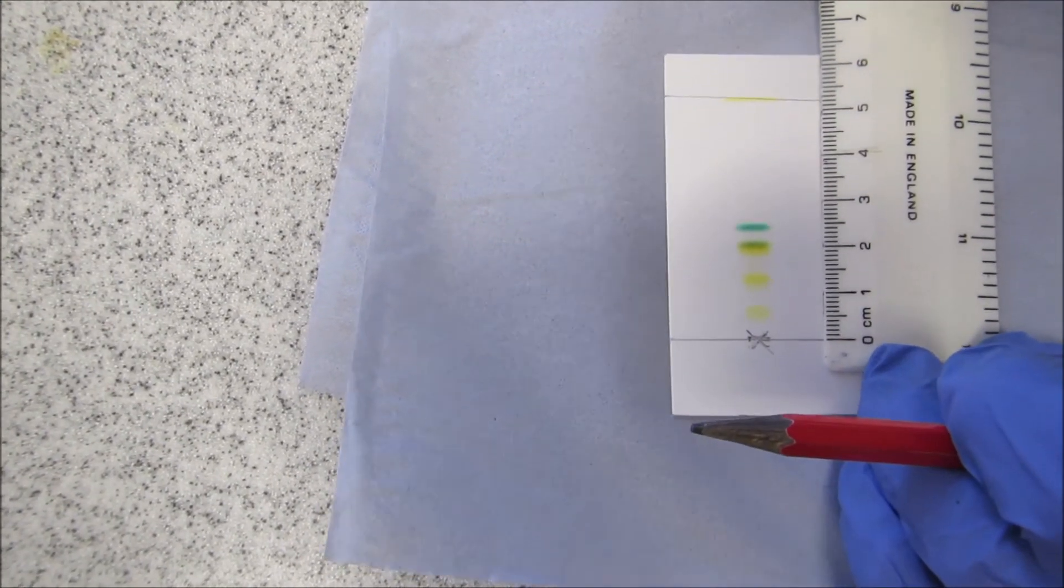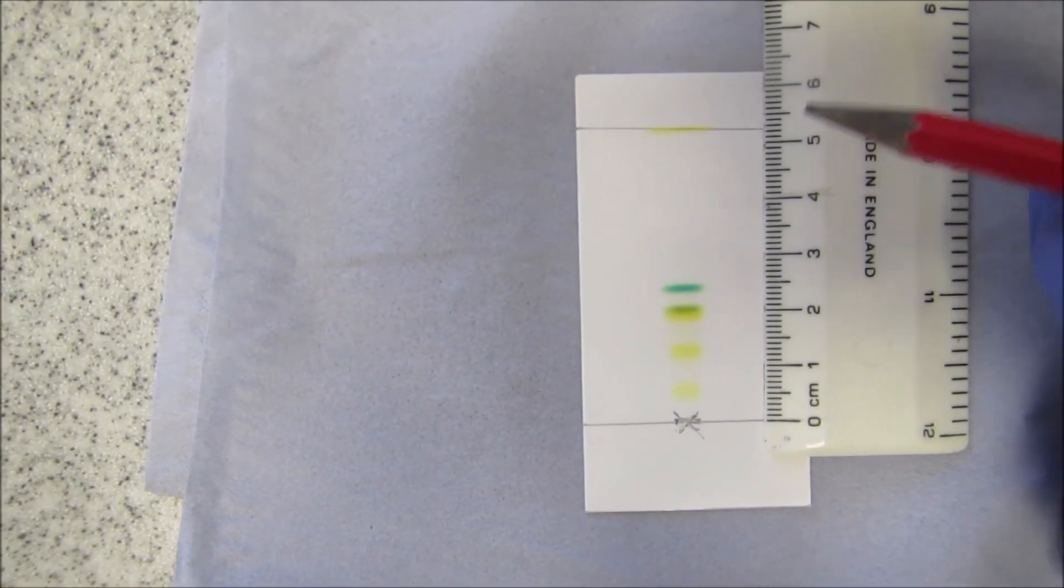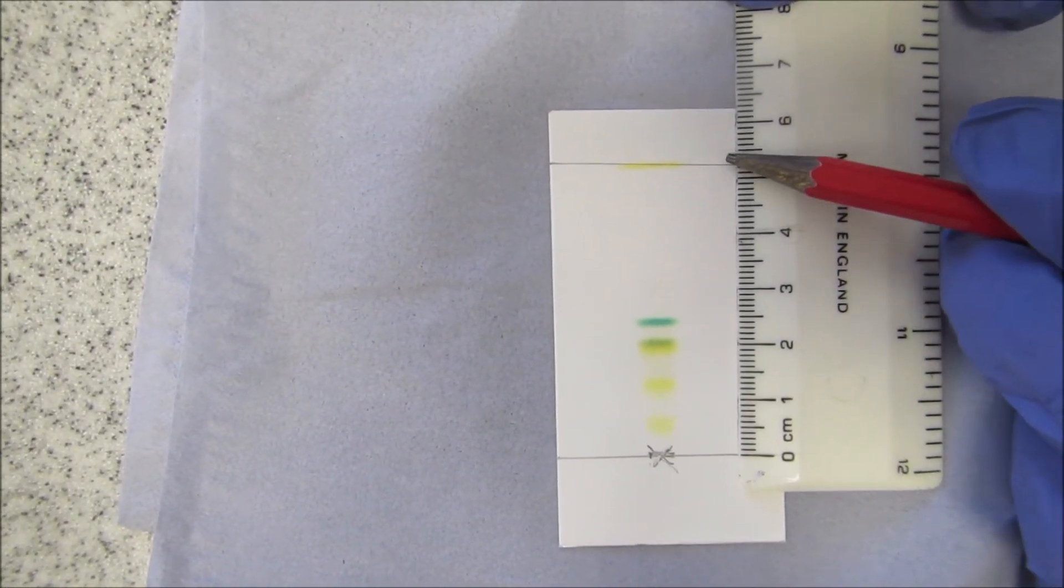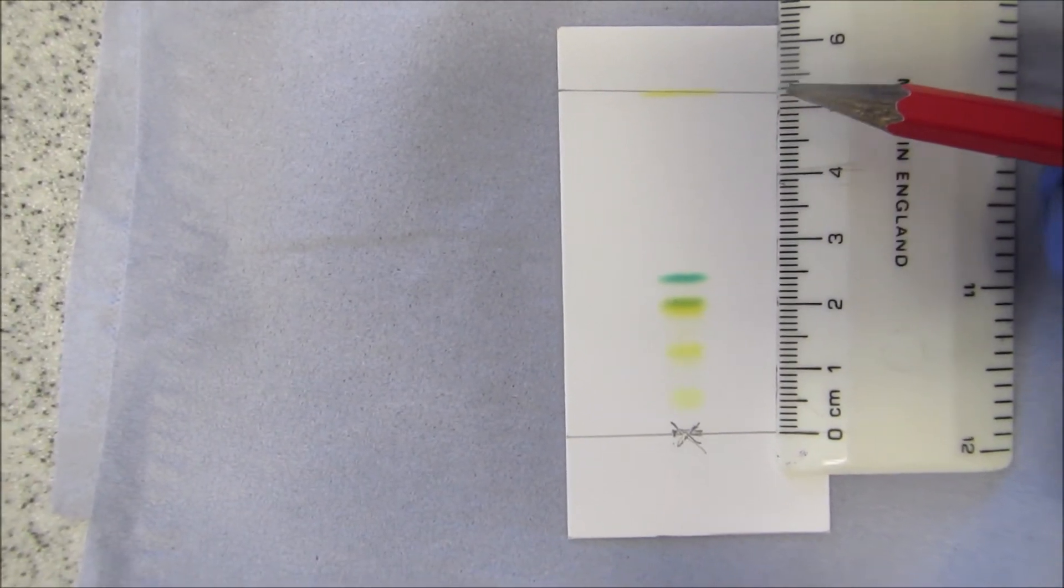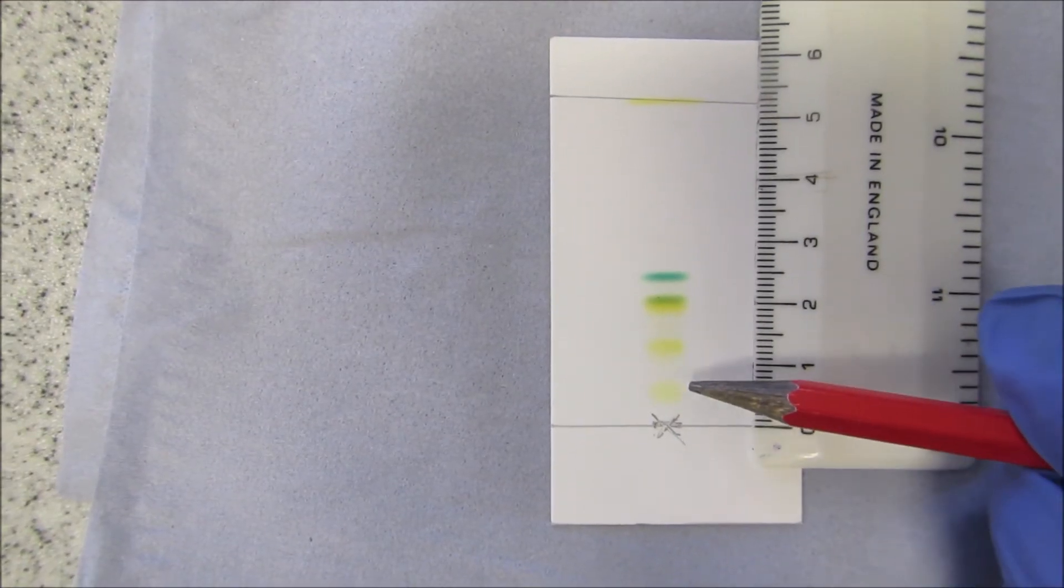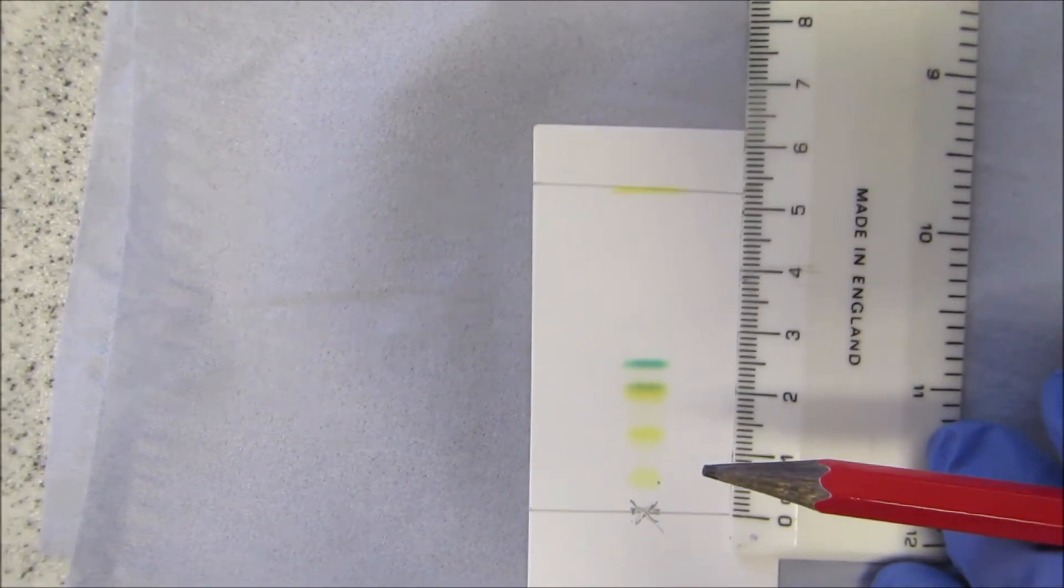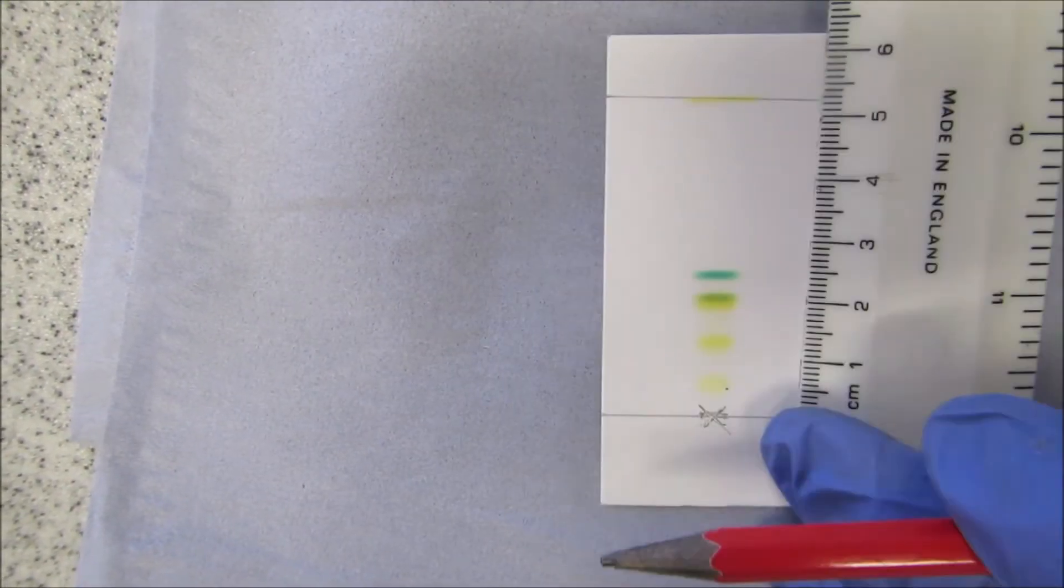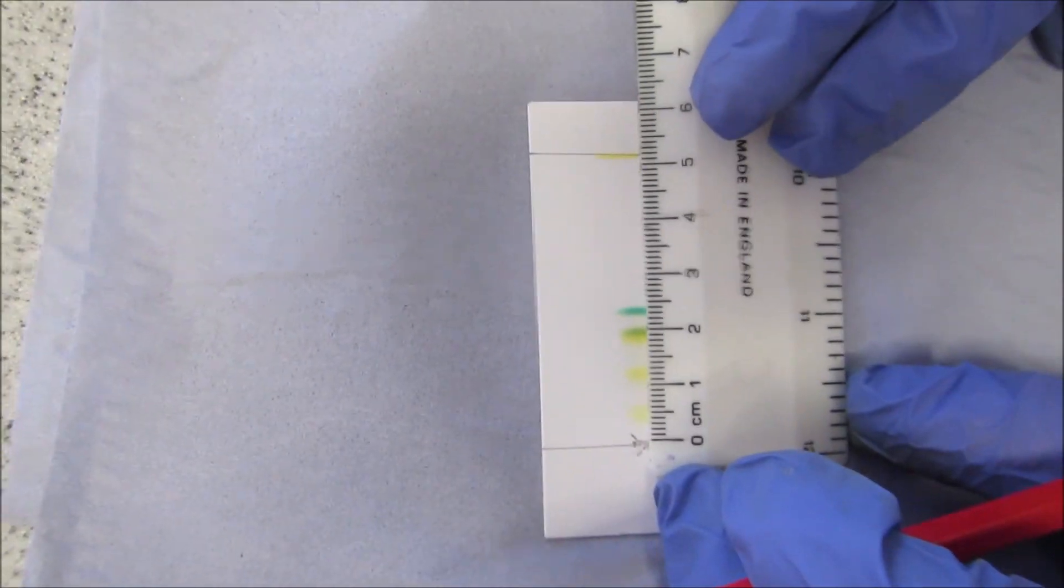So I'll just put a ruler there. You're going to be measuring from the line where it started. And then you're also going to want to measure to where the solvent ran, and that's the bottom one that you divide everything by. But you're also going to want to look at all pigments. So how many do you think there are? And if I move the ruler in, you can then hopefully calculate how far each spot has run.